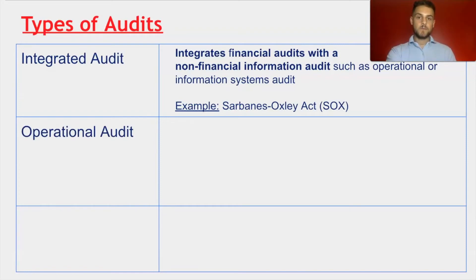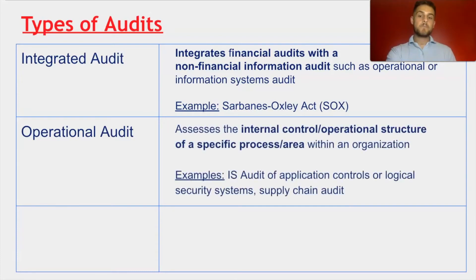The next type of audit we will look at is an operation audit. An operation audit assesses the internal control or operational structure of a specific process or area within an organization. Think of an IS audit of an application control or logical security systems or even a supply chain audit. It is focusing on one specific area within an internal control structure.